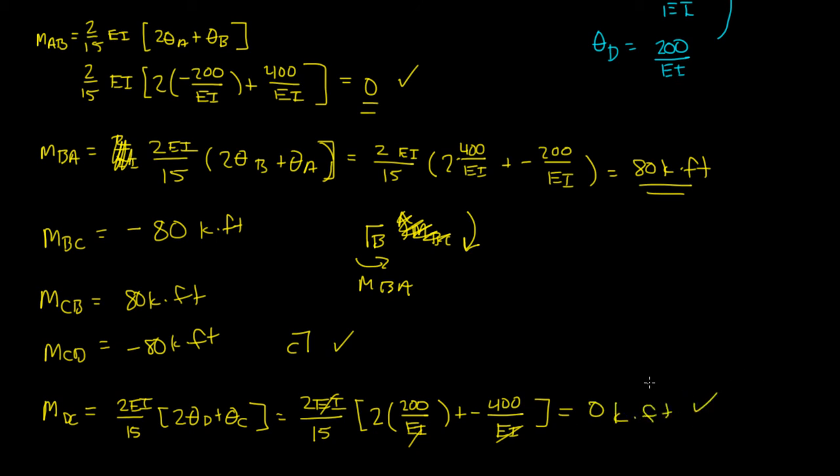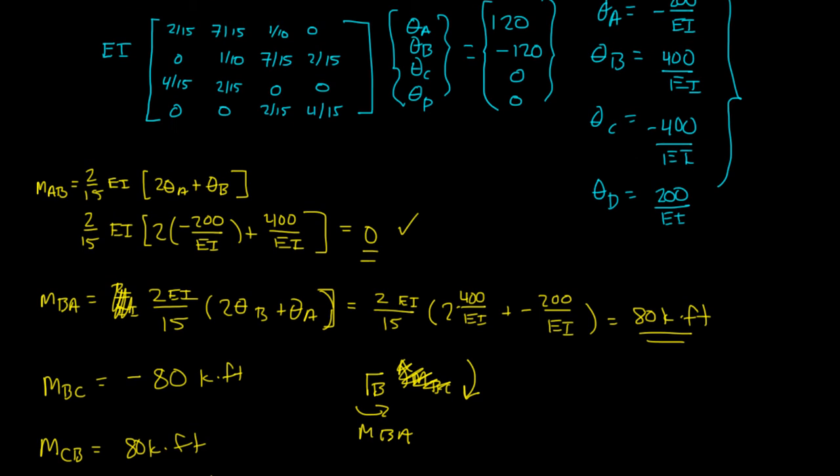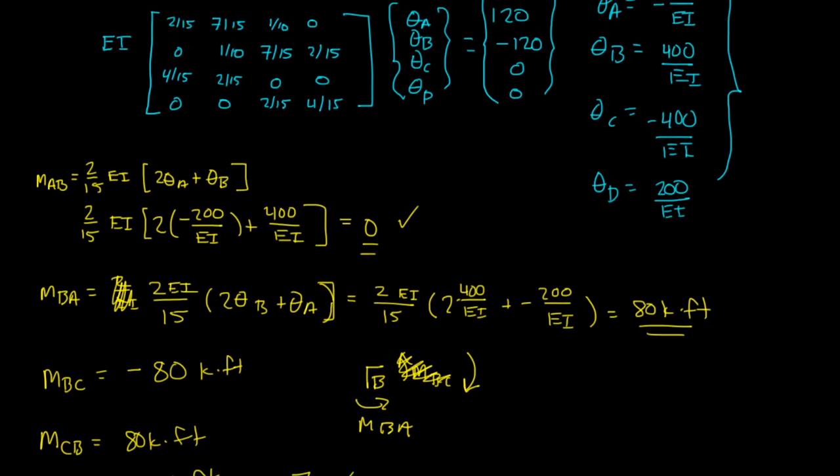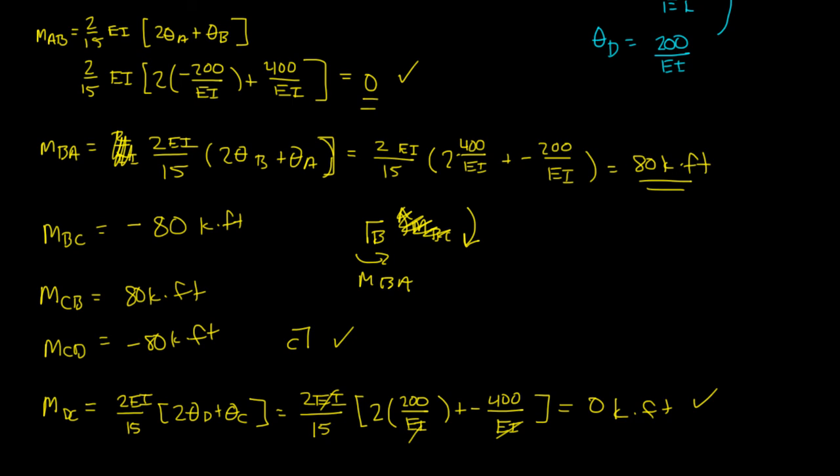So this was a problem. In this case, we had no chord rotations, but we actually had four unknowns. So we had to set up a 4 by 4 matrix to solve for the unknowns, or all the thetas, in that case. We plugged them into the moment equations, and this is what we got. All right, hopefully that helped.